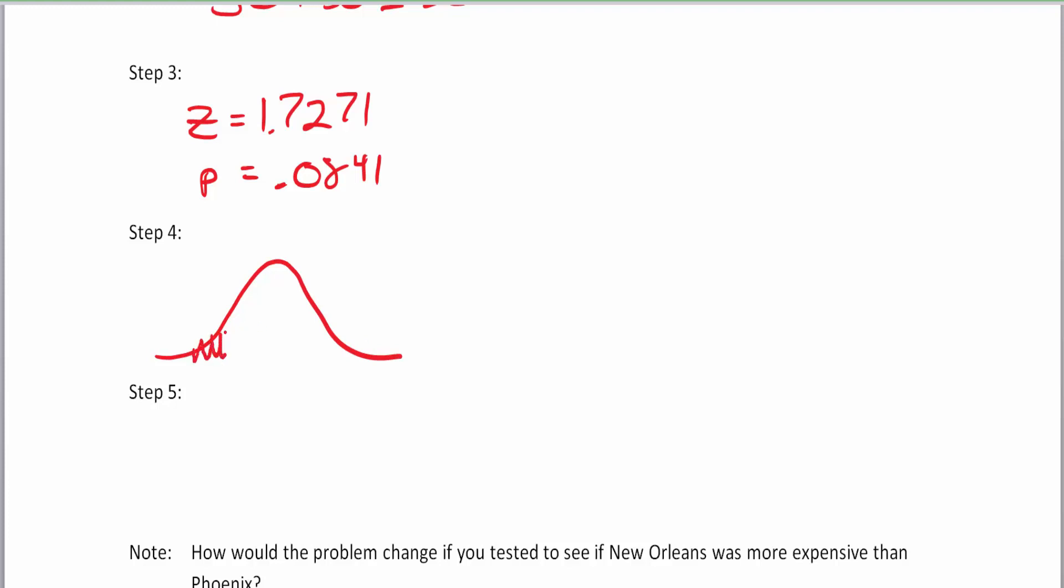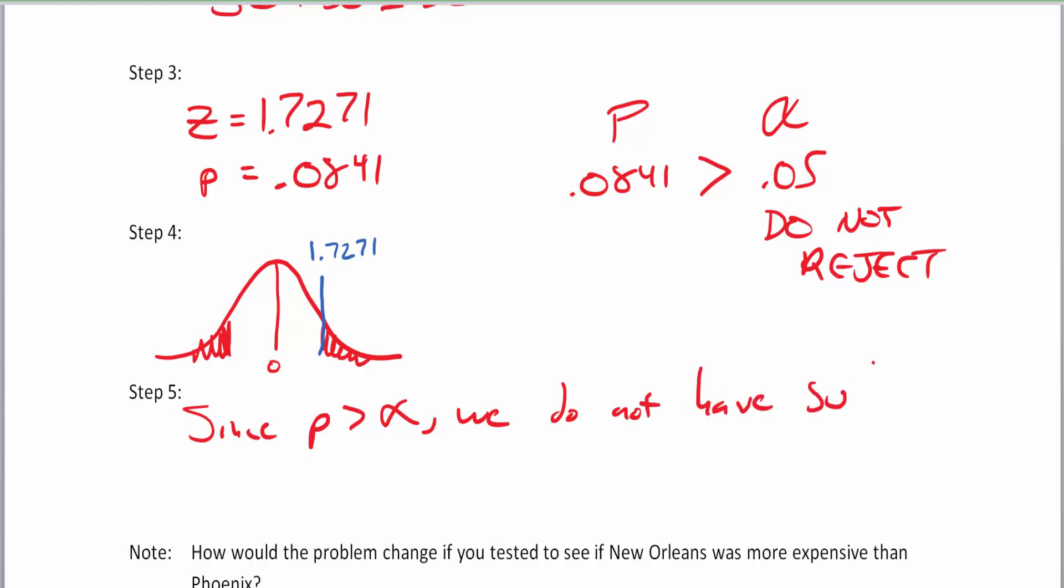Alright. There's our beautiful, beautiful z-curve with zero standard deviation. So the zero stands for no difference between the two. But we've got to plant our flag at 1.7271. So our p-value is .0841. And our alpha is only .05. And that means the p-value is greater than our alpha value. So this means we do not reject. So we can say that in this case, that there's no statistical difference between these two cities here. So since p is greater than alpha, we do not have sufficient evidence to reject the null hypothesis.